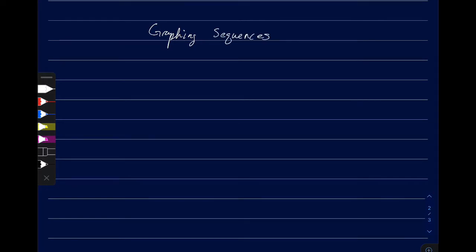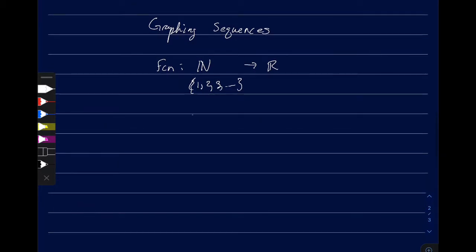Now let's look at graphing sequences. As mentioned before, we can think of it as a function from the natural numbers, which is 1, 2, 3, and so on, into the real numbers. Instead of having an x and y-axis, we're going to have our n-axis and our an-axis.